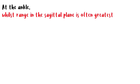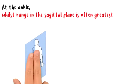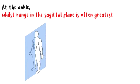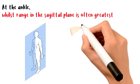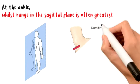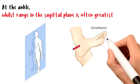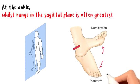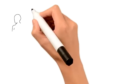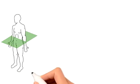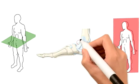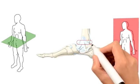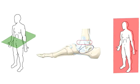At the ankle, whilst range in the sagittal plane is often greatest, it is certainly not to be thought of as a provider of only plantar flexion or dorsiflexion. Indeed, some feet exhibit more transverse and frontal plane motion at the ankle joint than they do at their subtalar joint.